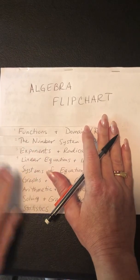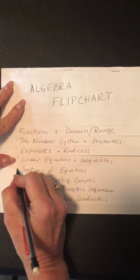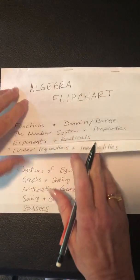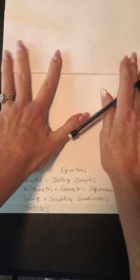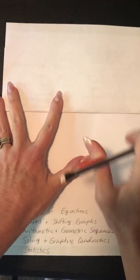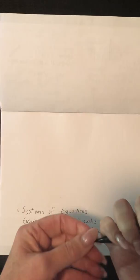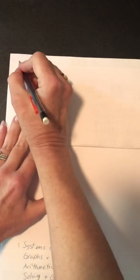Hi, we're going to do tab 5 now: systems of equations. There are three ways to solve systems of equations, and the first way is graphing.